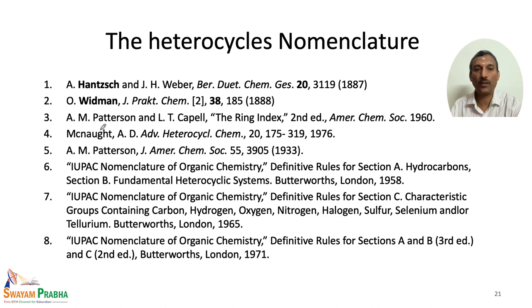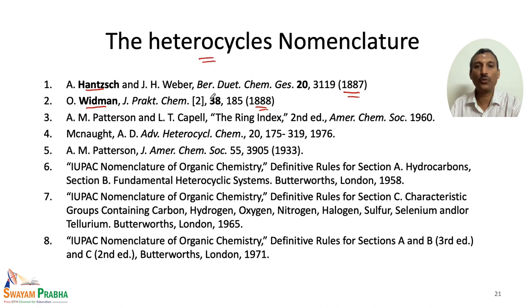Various journal articles are referenced here for those interested. These are very old papers from 1887 and 1888. Hans and Widmann are the two great scientists who introduced the nomenclature for heterocyclic compounds, which is why it bears their names. Later, IUPAC and others modified some of the rules.